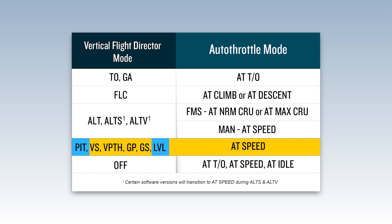Level will only be activated by ESP to return the aircraft to the normal flight envelope. If the autothrottle is active, it will transition to or maintain AT speed. If the autothrottle is not active, it will not automatically engage.